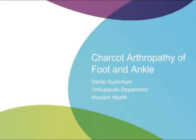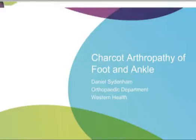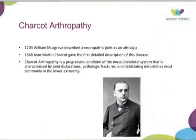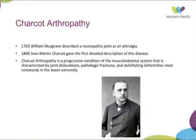In 1703, William Musgrave described the neuropathic joint as an arthralgia, and then in 1868, Jean Martin Charcot gave the first detailed description of this disease. There are many different definitions of Charcot Arthropathy, but it's a progressive condition of the musculoskeletal system, characterised by joint dislocations, pathological fractures, and debilitating deformities, most commonly in the lower extremity.